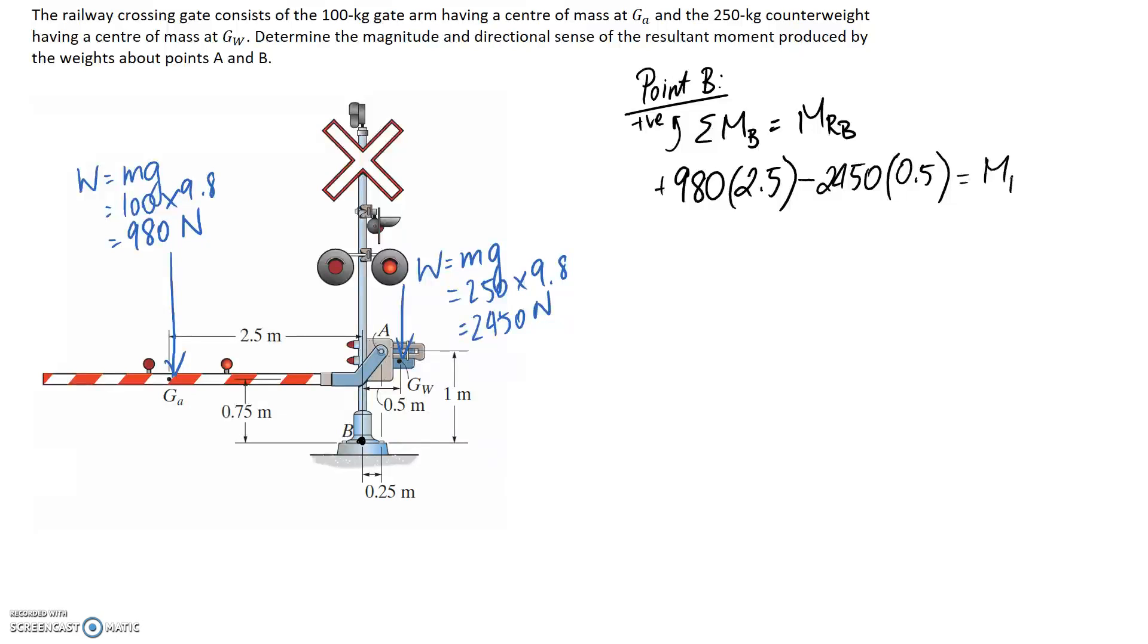So this is equal to our resultant moment. If we plug in the numbers, we find out that it's 1225 newton metres. The other thing it asked us in this question, we've given the magnitude here, it wants to know the directional sense. Is it going to try and push us clockwise or anti-clockwise?